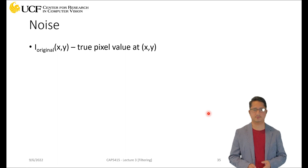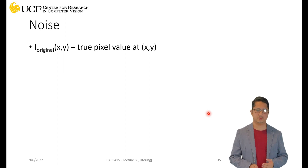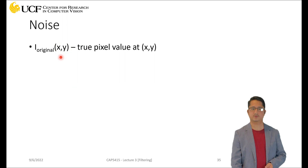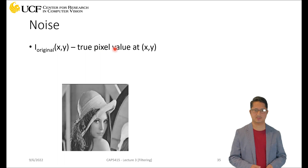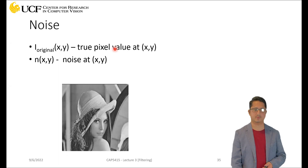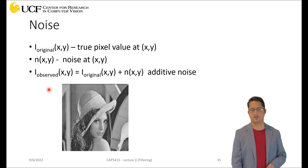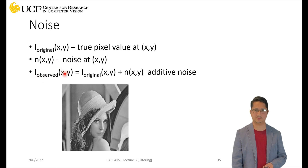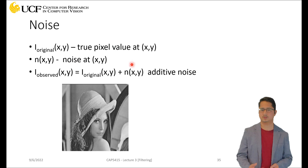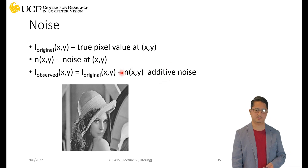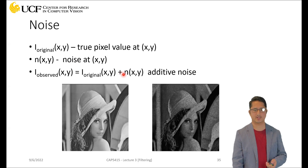Since noise has a distribution, we can model it. A simple way to do that: say you have an original noise-free image called I_original, a function of x, which gives you the true pixel value without any noise. Then at each pixel (x, y) in the grid we have some noise represented by a function n. To introduce this noise into the original image, the observed image model is: I_observed = I_original + n(x, y). We call this additive noise because we are simply adding noise to each pixel.